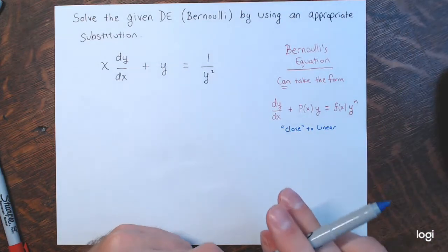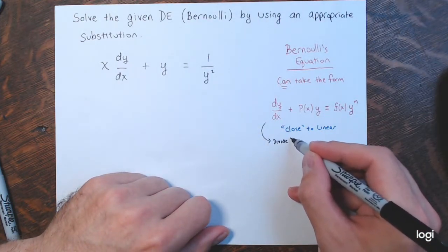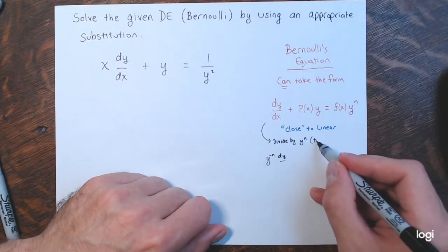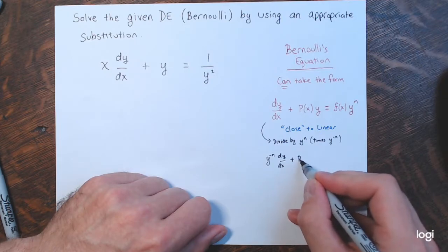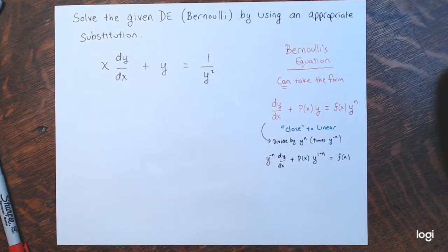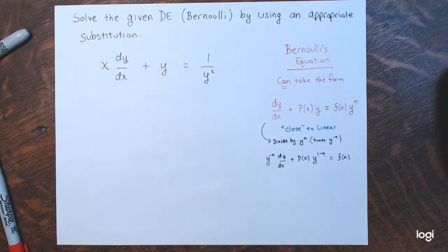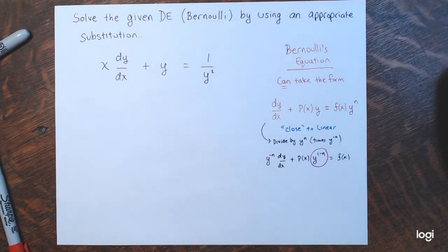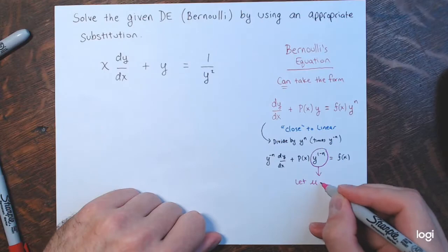If I divide by y to the nth, we get y to the negative n times dy/dx plus P(x) times y to the (1−n) equals F(x). This indicates what substitution to make. If I substitute u for y to the (1−n), calling it a new variable u, that will set up the transformation.